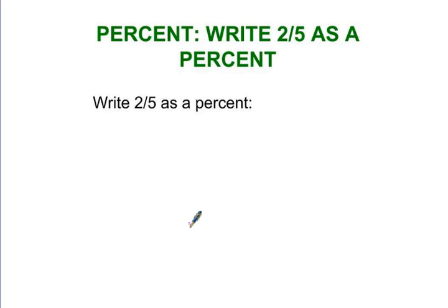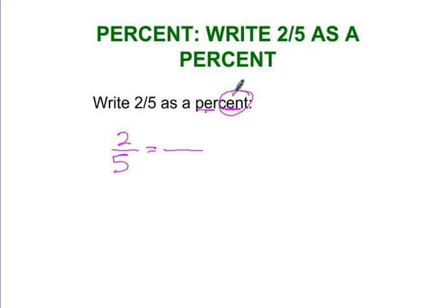Taking a fraction like two-fifths or three-tenths or whatever and writing it as a percent is pretty simple. First we write the fraction, then I'm going to write equals. Remember per cent means out of a hundred — cent, like cents, there's a hundred cents in a dollar. How many out of a hundred would this be?